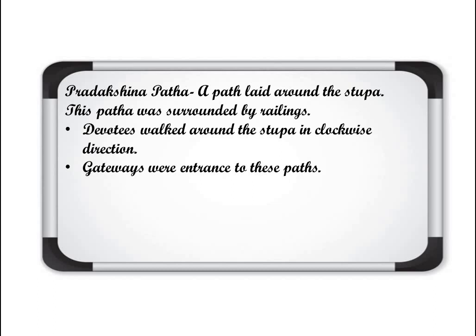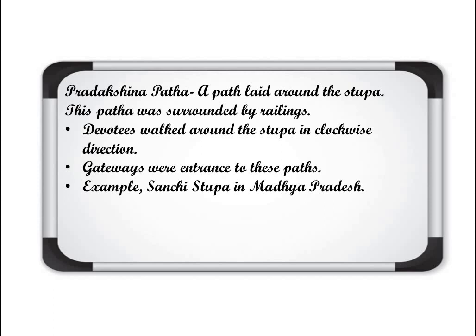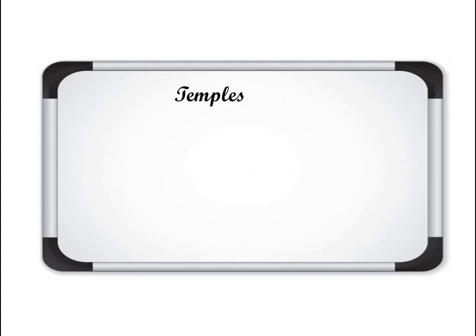The gateways and railings were gifted by different devotees. One example of a Stupa is the Sanchi Stupa in Madhya Pradesh. This Sanchi Stupa was built at the time of Ashoka. So the Stupa has a complete structure from the center — with the relic casket — to the full building, and devotees walk around the Pradakshina Path. Example: Sanchi Stupa in Madhya Pradesh.